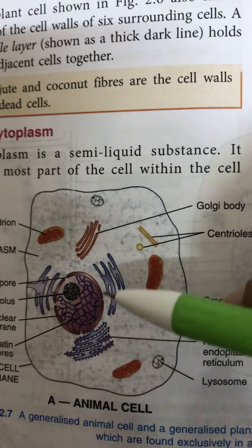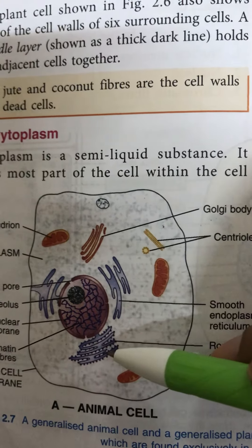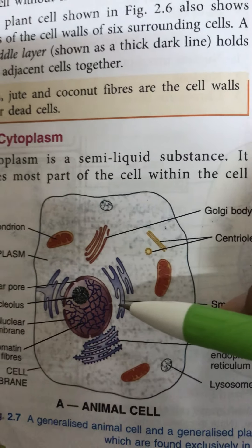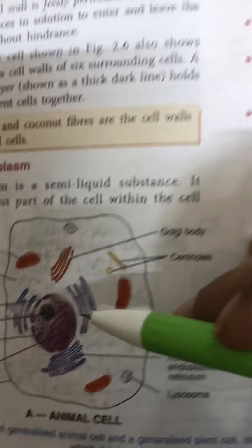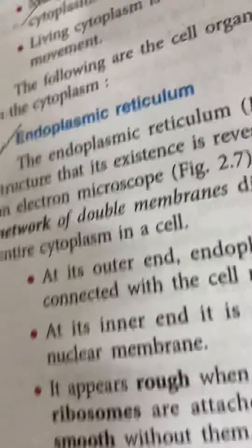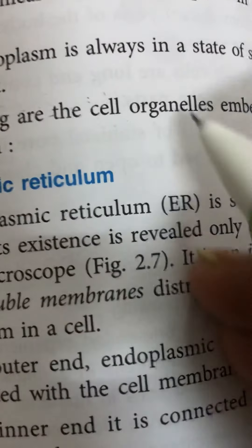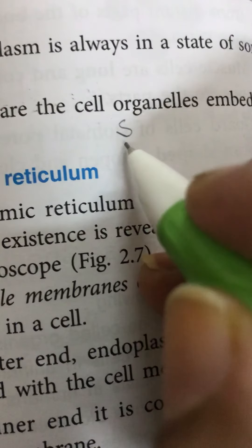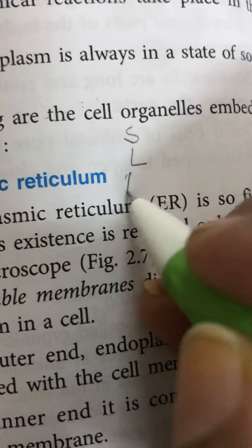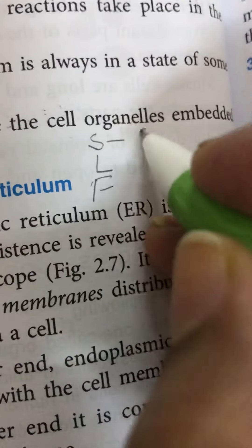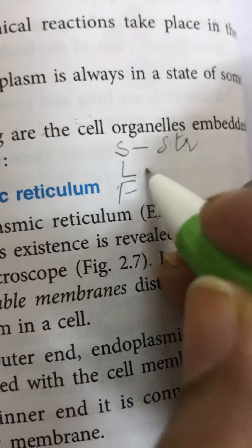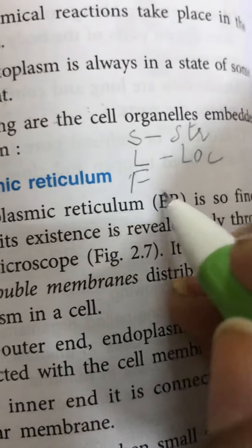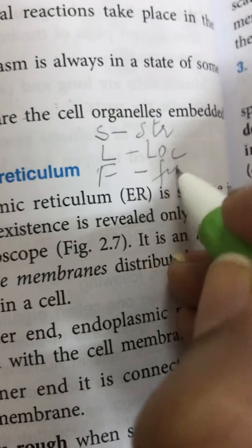This organelle — which you can see here, rough in nature here and smooth here — is the endoplasmic reticulum. So we study the first organelle, the endoplasmic reticulum. Three things have to be prepared for every organelle: S, L, and F — where S is the structure, L is the location, and F is the function.